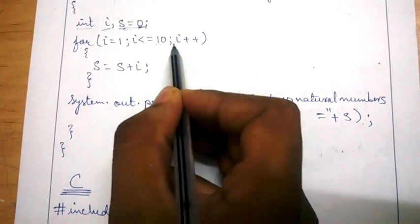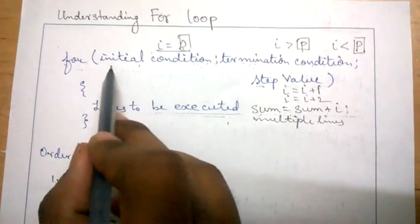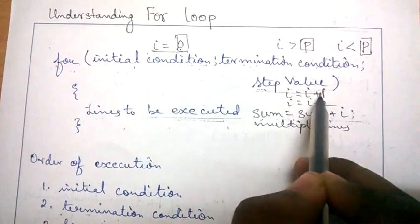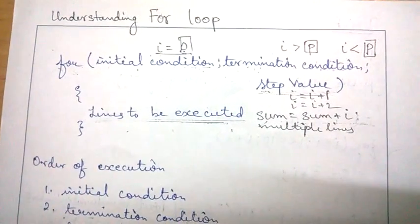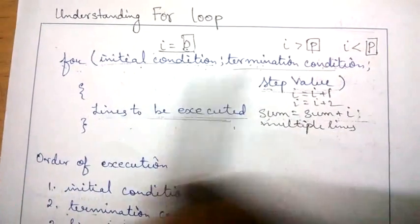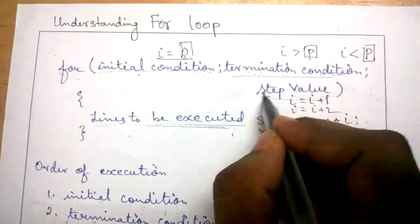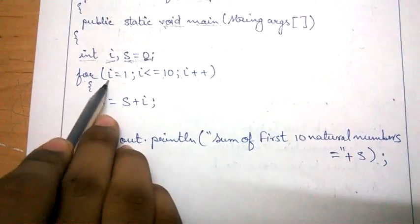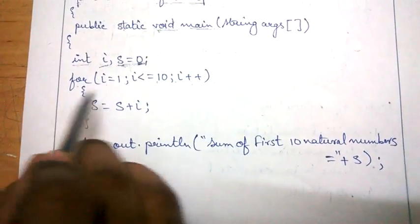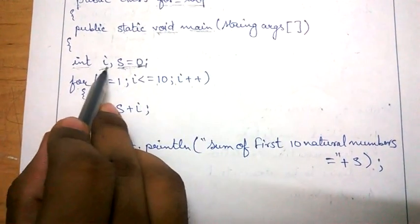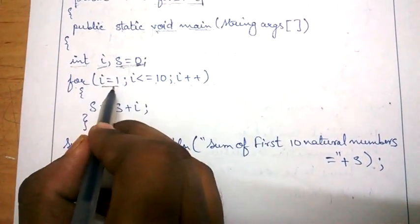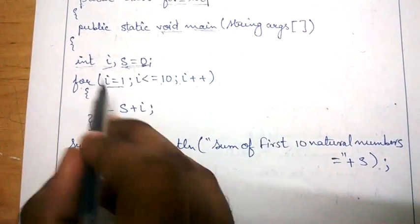As I told you earlier, first is the initial condition, then the termination condition, then the lines to be executed, then the step value. So the program will start with i equal to 1. I have not initialized i with any other value earlier, so here I initialize it; otherwise it would take a garbage value.